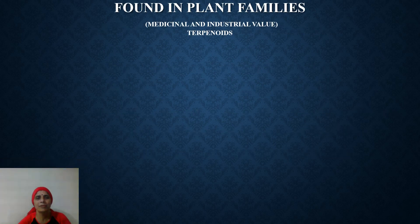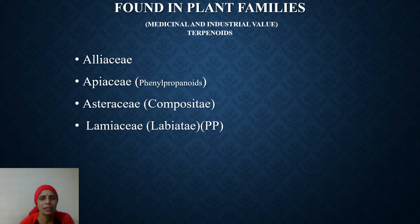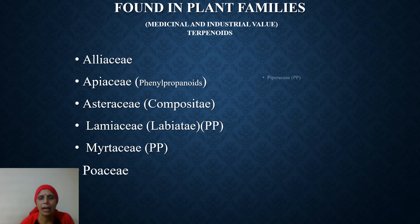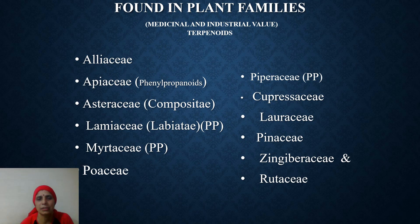Let us find out in which plant families we can get these essential oils, because they are of medicinal and industrial value. The families include Aliaceae, Apiaceae, Asteraceae, Lamiaceae, Myrtaceae, Poaceae, Piperaceae, Cupressaceae, Lauraceae, Pinaceae, Zingiberaceae, and Rutaceae.